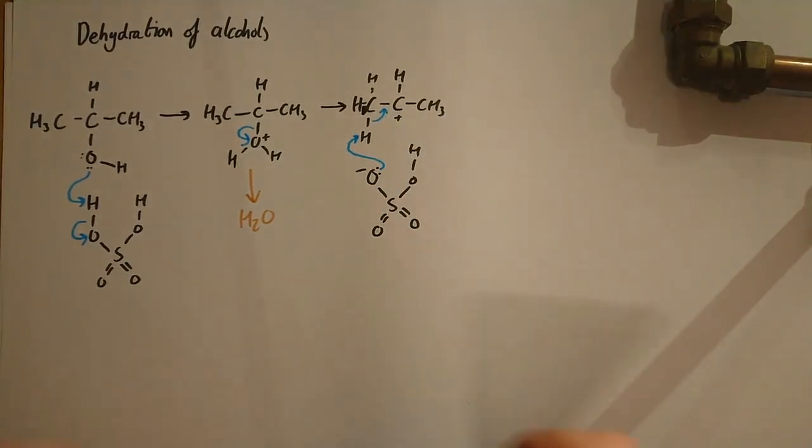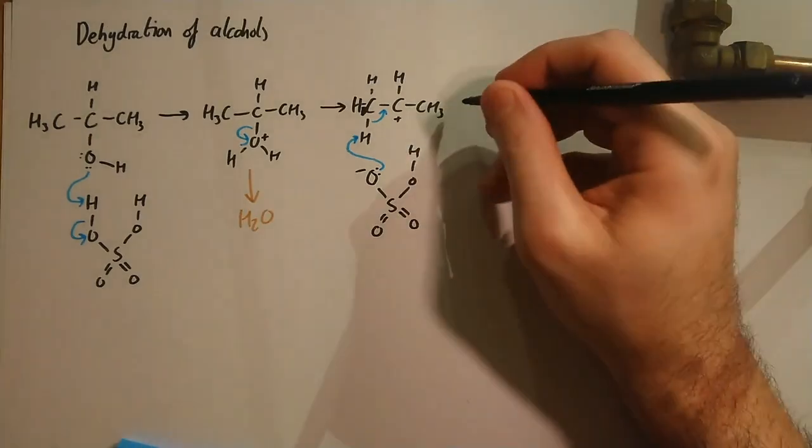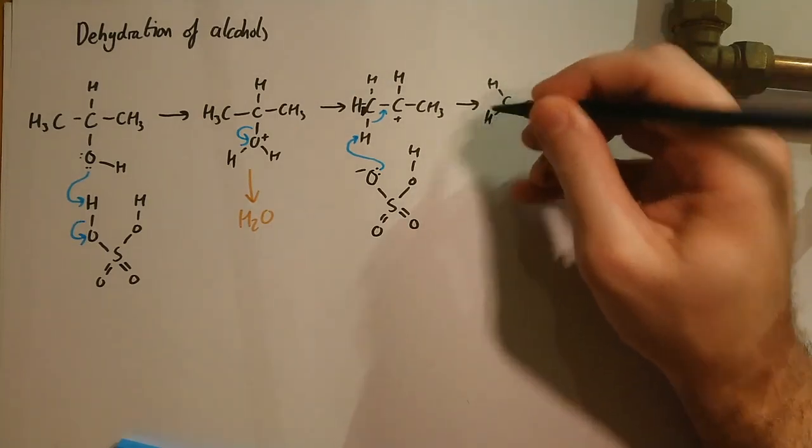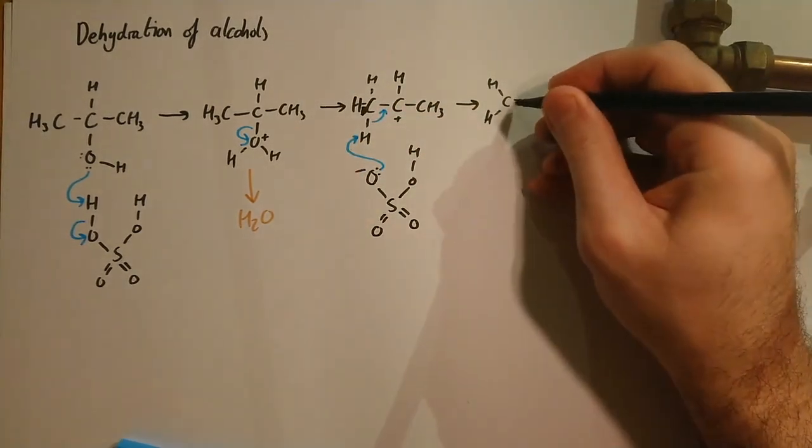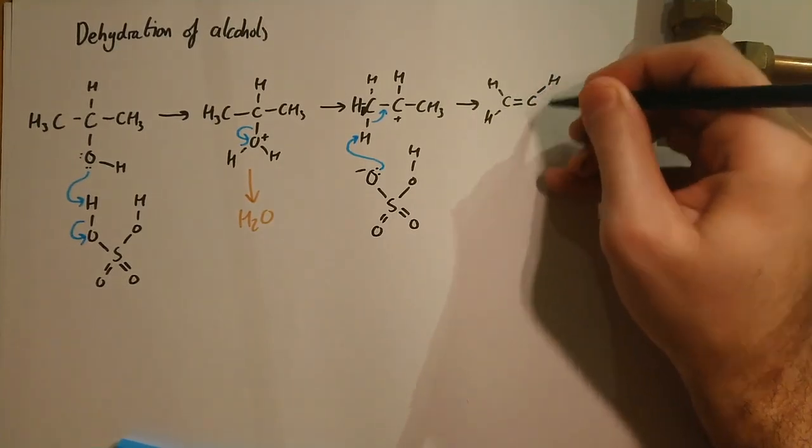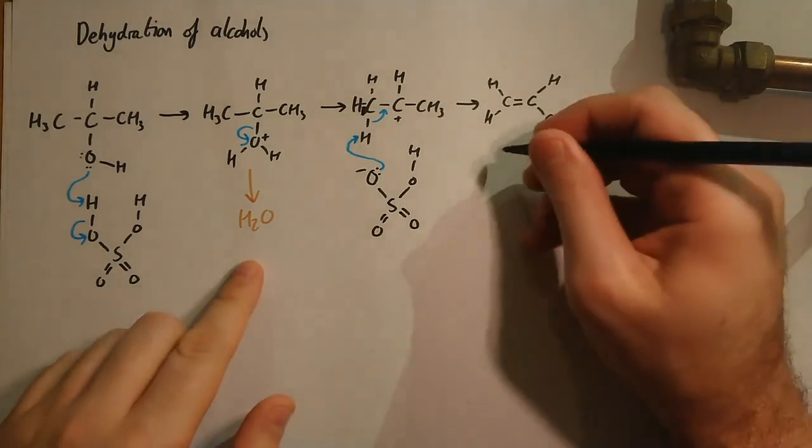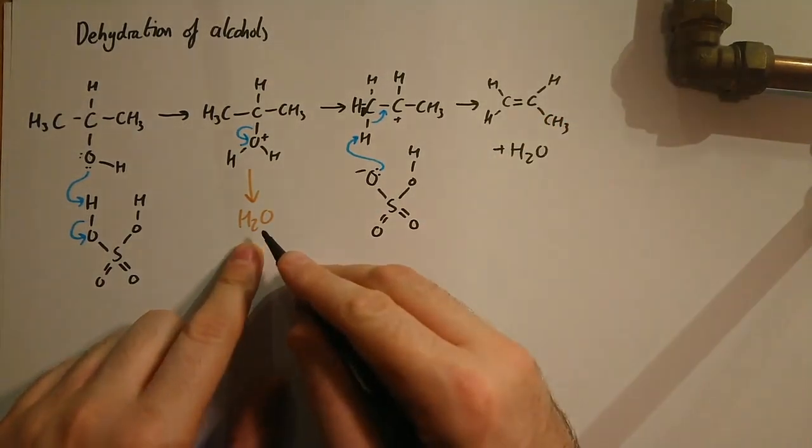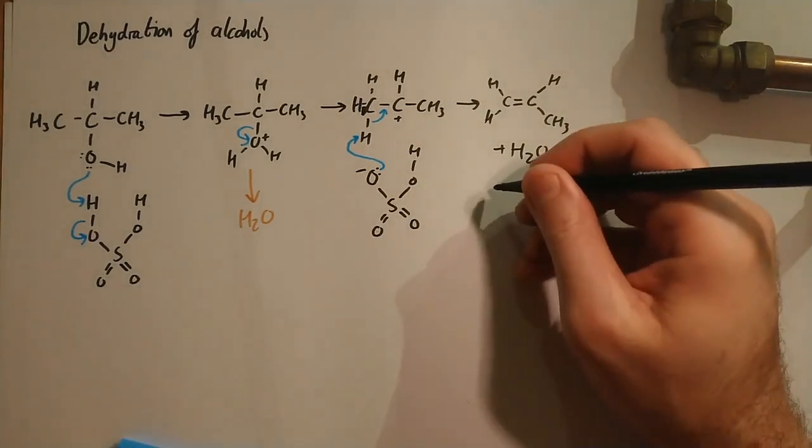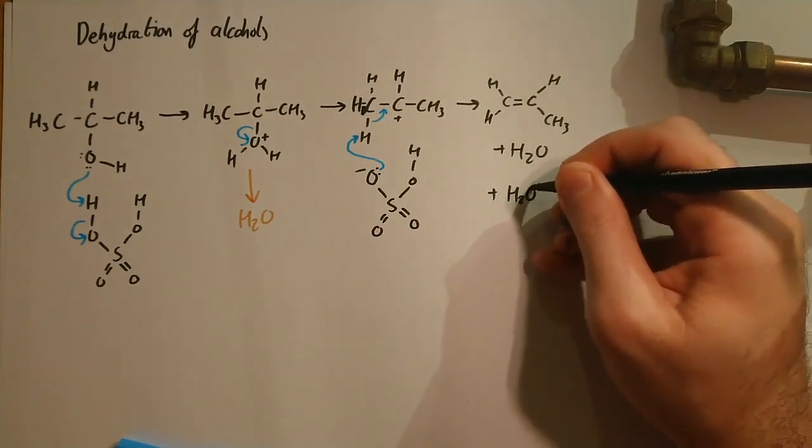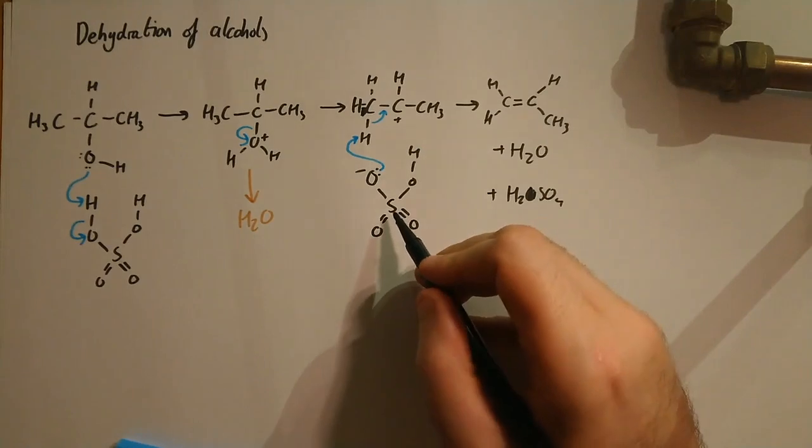If we draw out what we've actually made there, the first carbon's been left with two hydrogens because this one's disappeared, and this one has just got hydrogen and the CH3 group on it. So we've formed propene. We've also formed the water from this step here; don't forget about that. And we've also got the H2SO4 that we've made here.